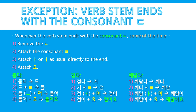When the verb stem ends with the consonant ㄷ, some of the time you'll remove the ㄷ, attach the consonant ㄹ, and then attach the vowel 아 or 어 as usual directly to the end, and finally attach 요. So the verb 듣다 becomes 들어요. 걷다 becomes 걸어요. And 깨닫다 becomes 깨달아요.